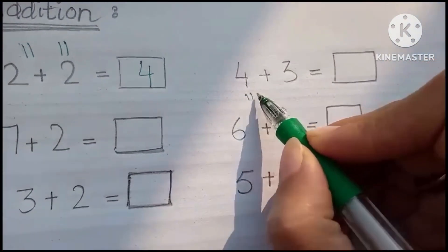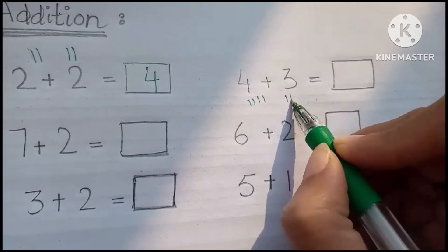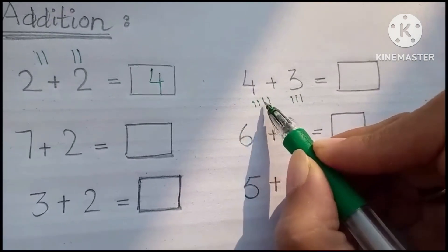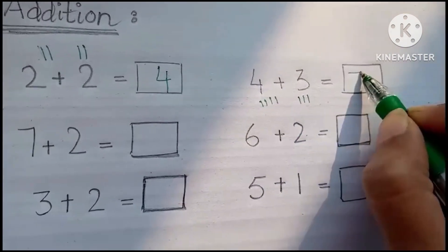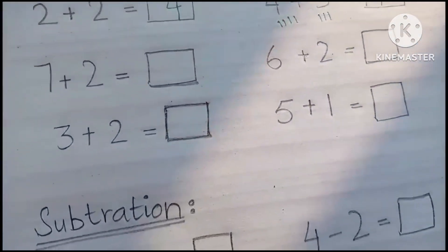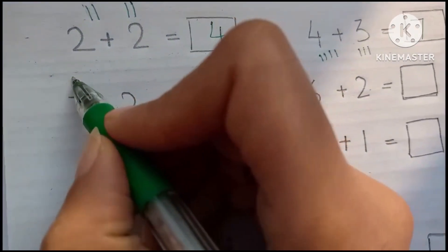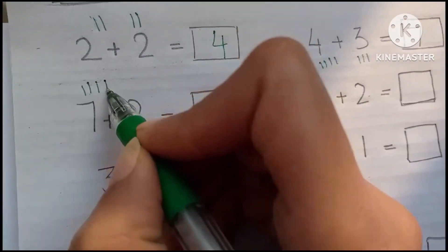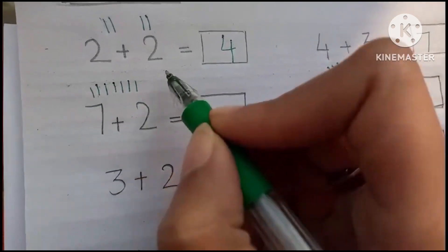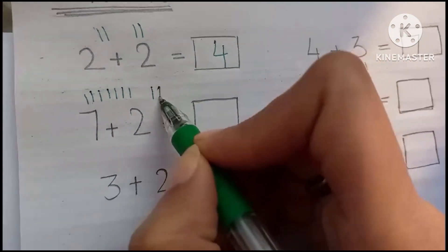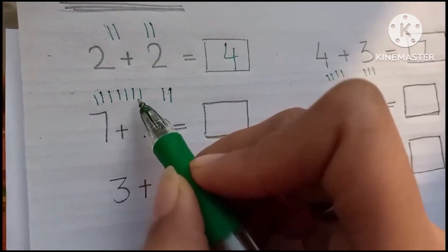4 plus 3: 1, 2, 3, 4, 5, 6, 7. 4 plus 3 is 7. And 7 plus 2: 1, 2, 3, 4, 5, 6...